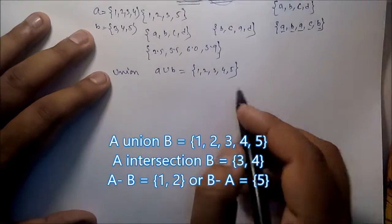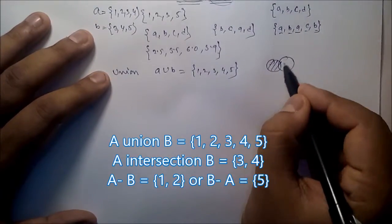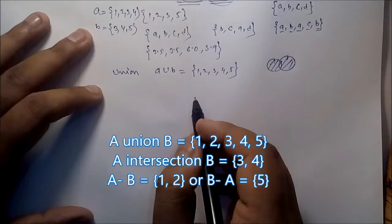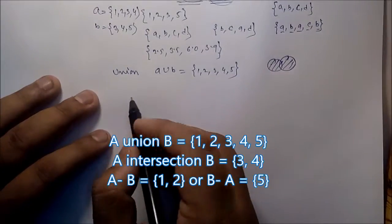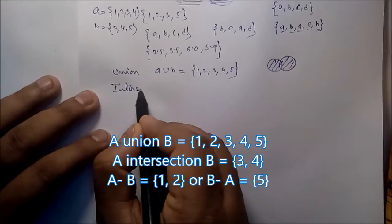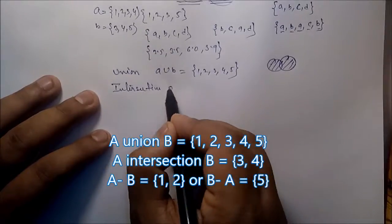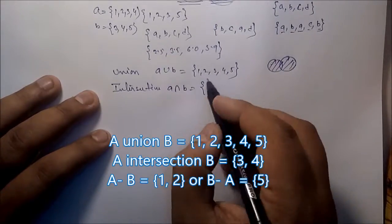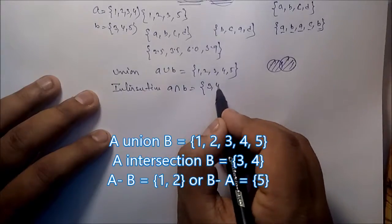We can also explain this using a Venn diagram. Next is intersection. A intersection B gives the output {3, 4}, which is the common part between the two sets.